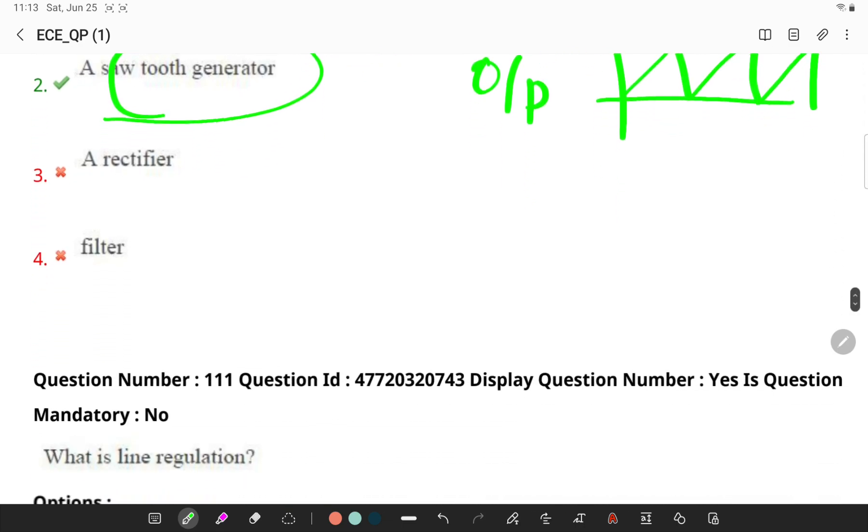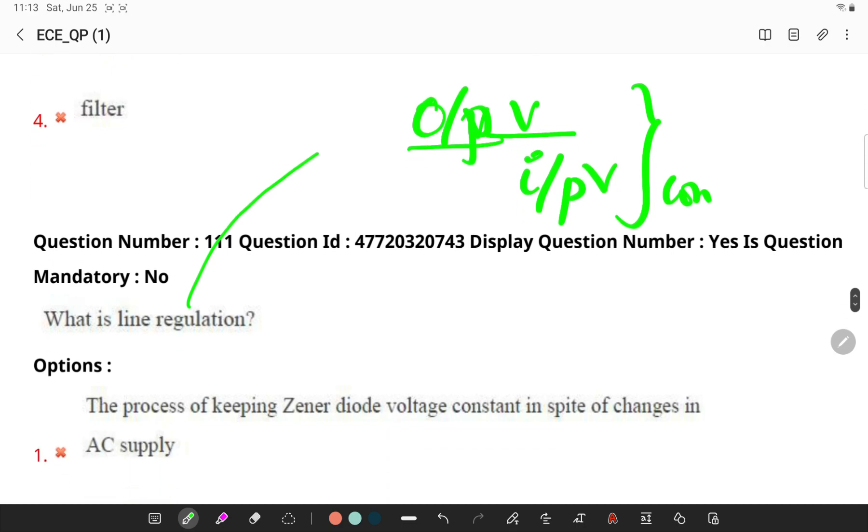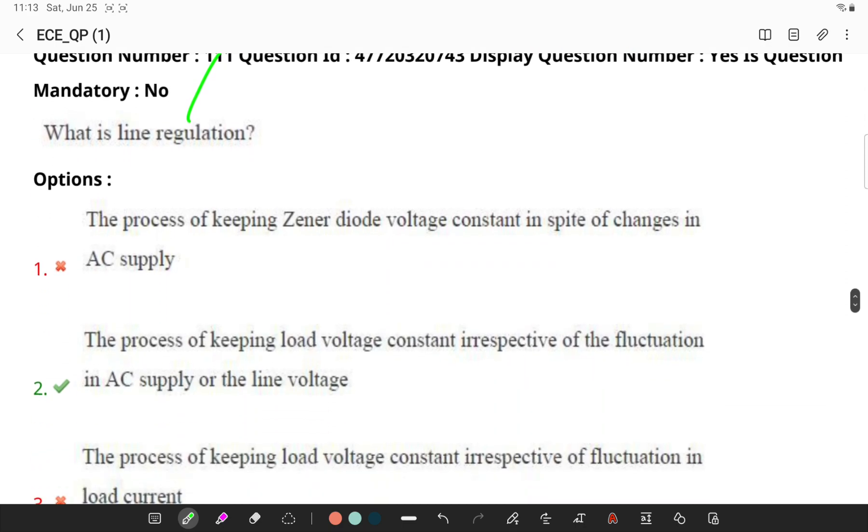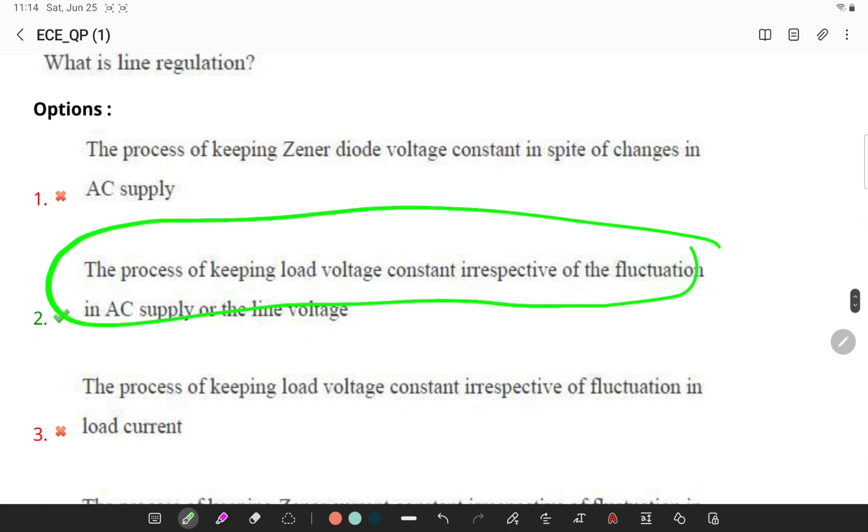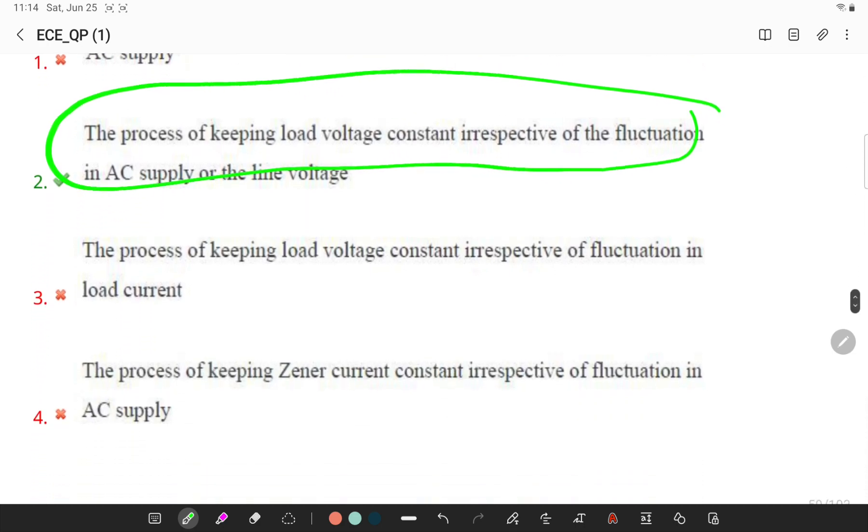Next question, what is line regulation? Line regulation is simply the change in output voltage due to the variation of the input voltage with all other factors held constant. It is expressed as a percentage of nominal output voltage. A power supply with tight regulation delivers optimum voltage throughout the operating day. The process of keeping load voltage constant irrespective of the fluctuation in AC supply or the line voltage.